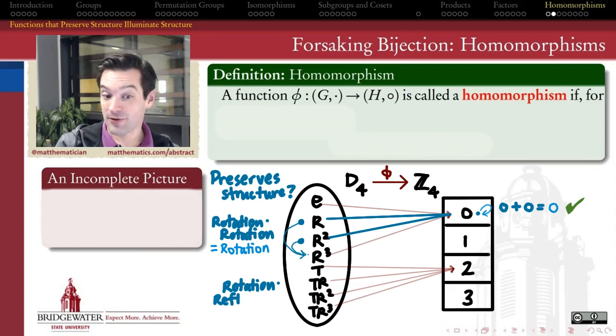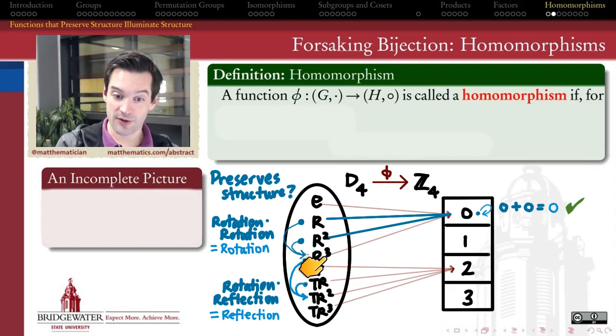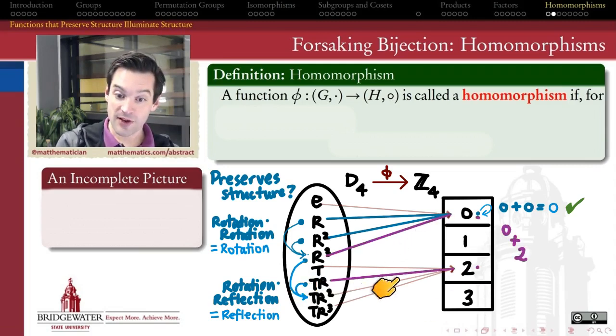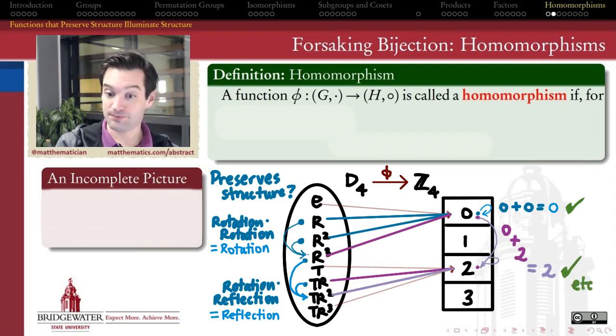What happens if I take a rotation and a reflection? If I compose a rotation and a reflection together in the dihedral group, the result is a reflection. So r cubed times tr gives me tr squared in D4, which is also a reflection. What does that look like in the target group Z4? My rotation gets sent to zero, my reflection gets sent to two, and if I compose them together in Z4, I get zero plus two equals two, which also represents a reflection. So we can see there's structure preservation going on here. The same ways in which rotations and reflections compose together in D4 are reflected by the ways in which their images 0 and 2 add together mod 4 in Z4.